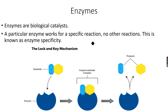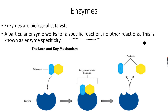Enzymes work in a different way than normal inorganic catalysts. A particular enzyme works only for a specific reaction and no other reactions. For example, amylase will only work for the breakdown of starch into sugar molecules — no other reaction. This is known as enzyme specificity, and this diagram exactly explains what enzyme specificity is.